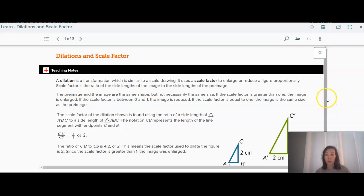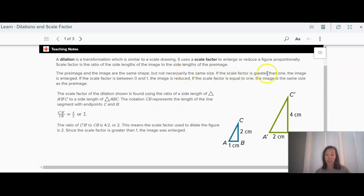So the scale factor could be a number bigger than one or a number less than one between zero and one. If the scale factor is bigger than one, then we enlarge the image. If the scale factor is between zero and one, then the image actually gets smaller. If the scale factor is equal to one, then it's the exact same size.